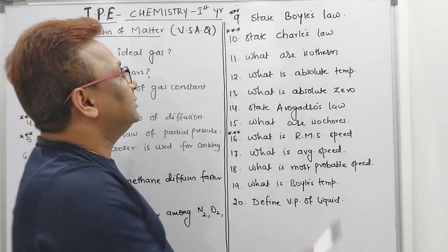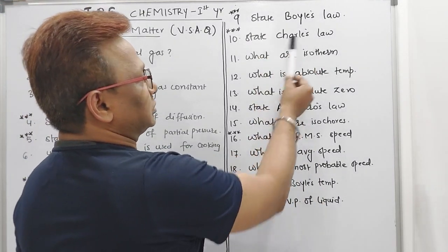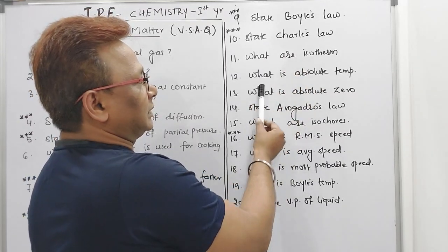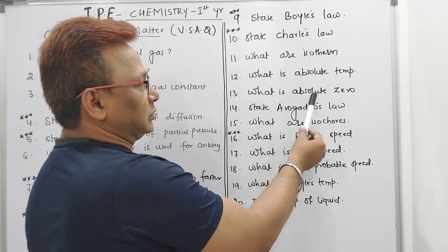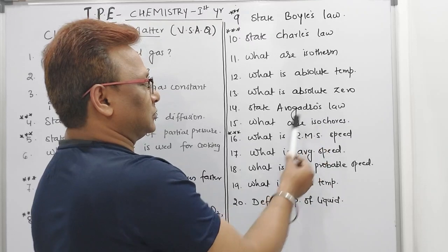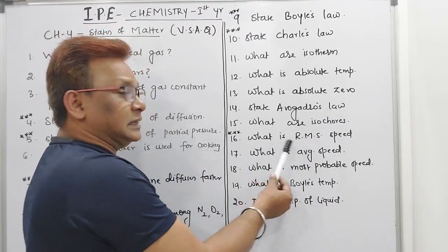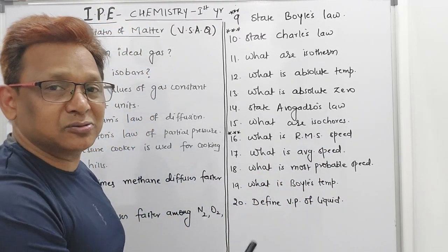State the Boyle's law, state Charles law. What are the ISO terms? What is absolute temperature? What is absolute zero? State the Avogadro's law. What are the ISO cores? What is RMS velocity? RMS speed is good as RMS velocity.